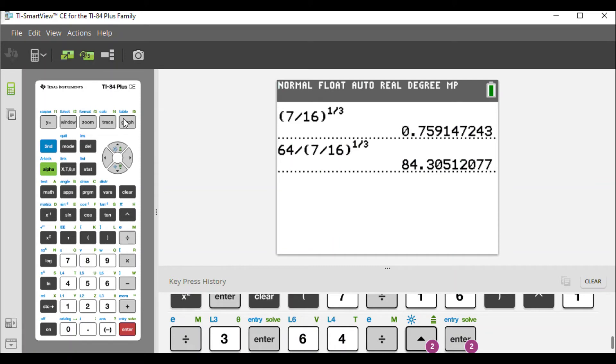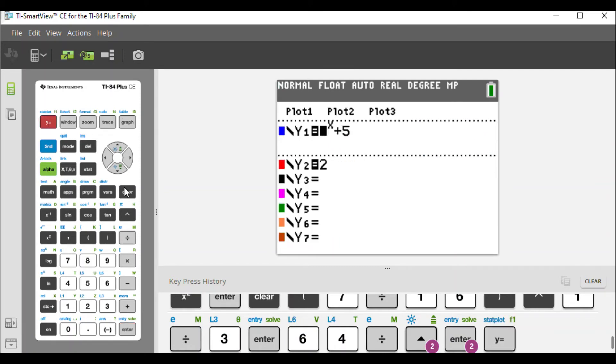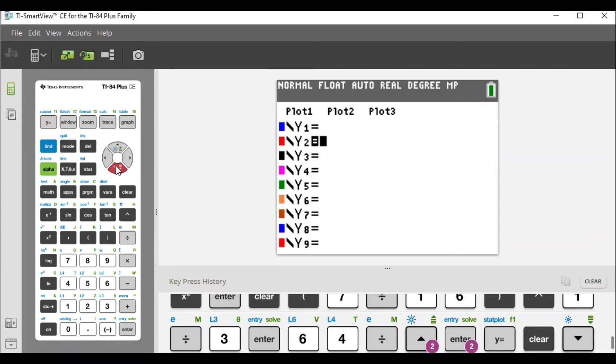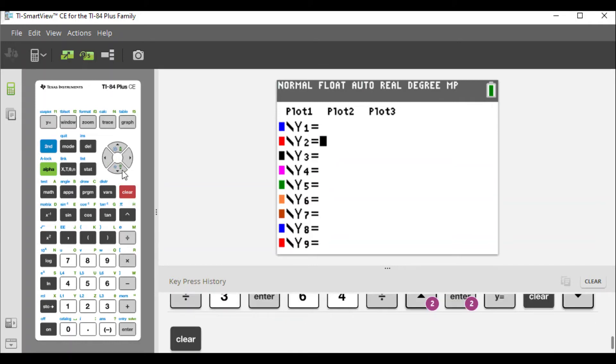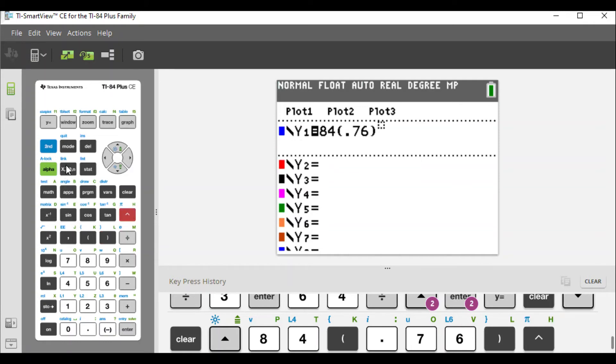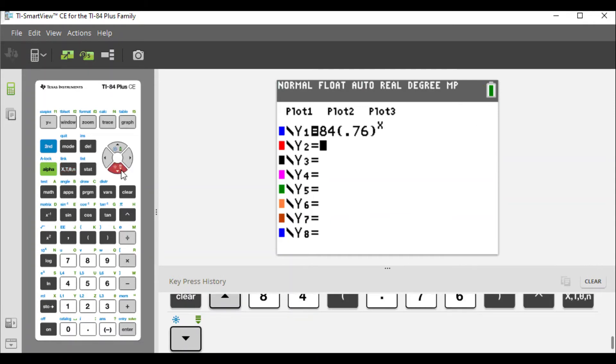I'll go to the graphing calculator. Y equals—let me just clear some of this stuff here from previous problems. We had our function here: Y1 = 84 times 0.76 raised to the x power. That's the function we're going to use to model the height of the water.